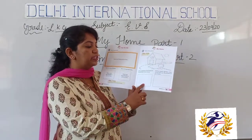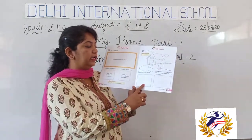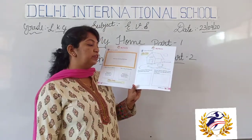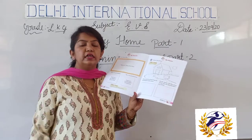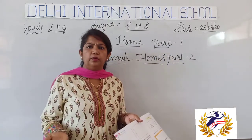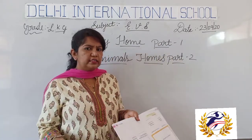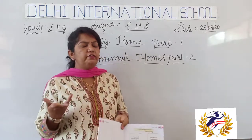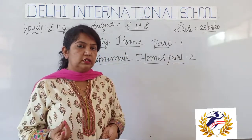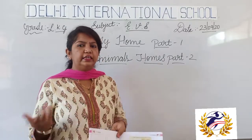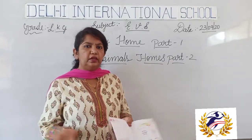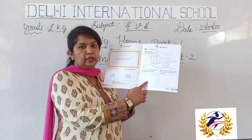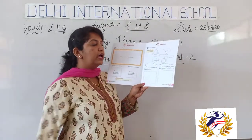And now, draw a picture of the thing you like the best in your home. There are so many things at your home — maybe your toys, your reading table, or your cot. Which things you like most? Some will like toys, some will like the reading table. You had to draw the picture.